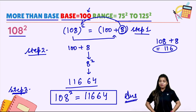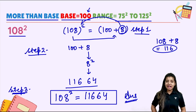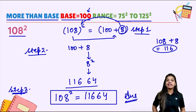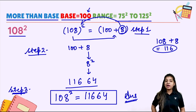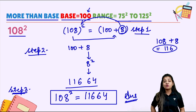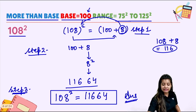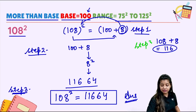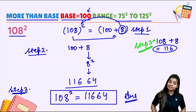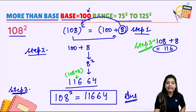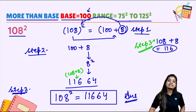Do you understand the trick? What did we actually do? We broke 108 into 100 plus 8. Write 8 squared as 64. Then take the 8 that you added — go to your original number 108 and add it: 108 plus 8 gives 116. Write 116 here — that is Step 3. So your answer is 11664.